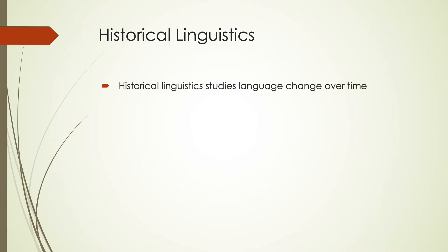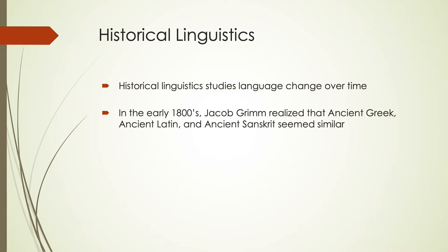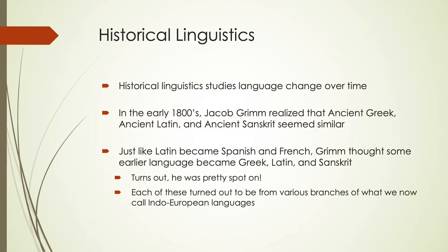This is one of our older forms of linguistic study. It came about partly because in the early 1800s, Jacob Grimm of the Grimm brothers realized that ancient Greek, ancient Latin, and ancient Sanskrit had some similarities between each other. What he started positing was that if Latin later became Spanish and French, maybe there was some earlier language that became Greek and Latin and Sanskrit. And it turns out he was pretty spot on.